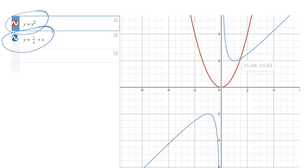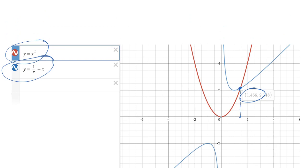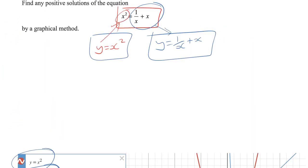So the only point of intersection we have is here. So this x-coordinate is going to be our answer, and you can see there it is, 1.466. So let's write that down as our answer.